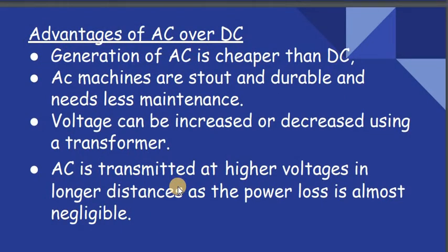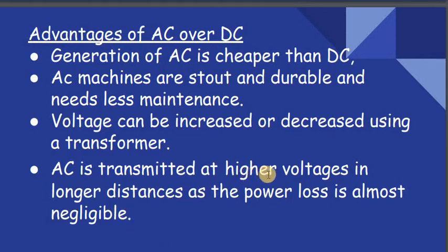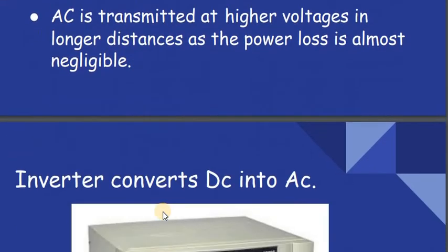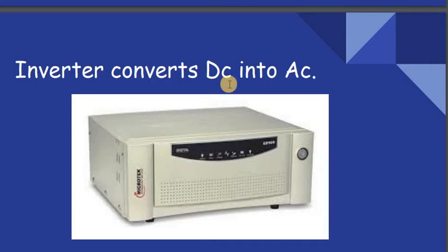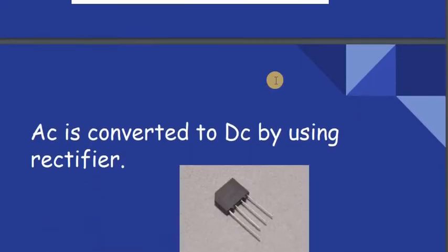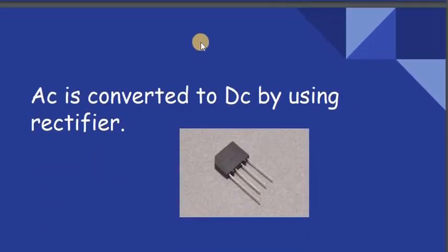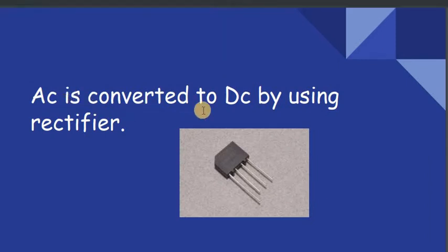These are some advantages of AC over DC: the generation of AC is cheaper than DC; the AC machines are stout and durable and need less maintenance; the voltage can be increased or decreased using a transformer; AC is transmitted at higher voltage over longer distances as the power loss is almost negligible. We use an inverter to convert DC into AC, and AC is converted to DC by using a rectifier.